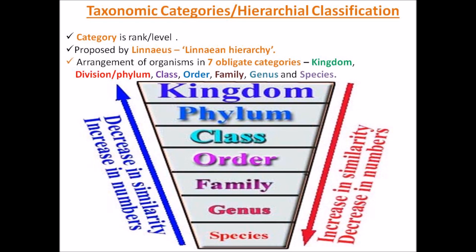Just repeating, who proposed the taxonomic categories? It was Linnaeus. Total how many obligate categories are there? Name them — seven: Kingdom, Phylum (or Division in the case of plants), Class, Order, Family, Genus, and Species. What is a category? It is a level, rank, or position in a system of classification — like students in a class having first rank, second rank, or tenth rank.